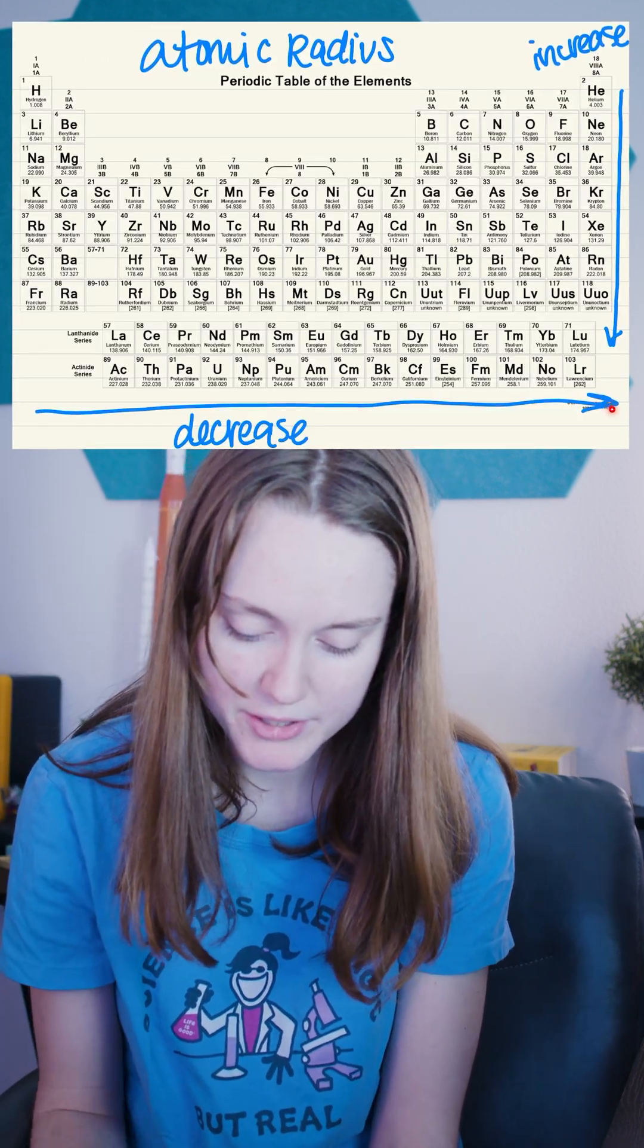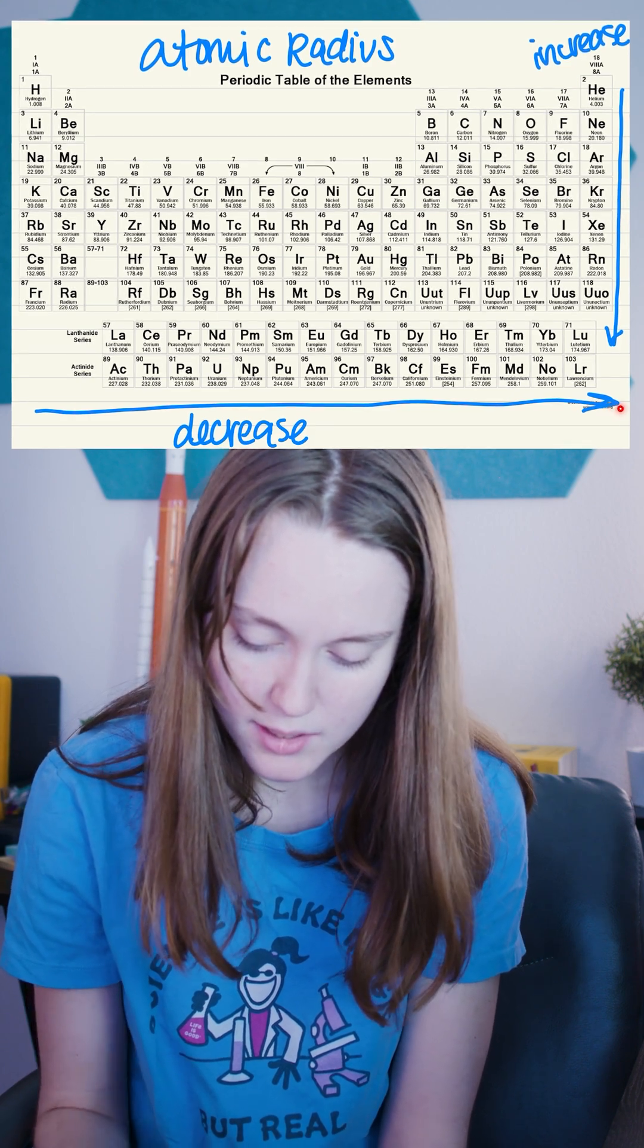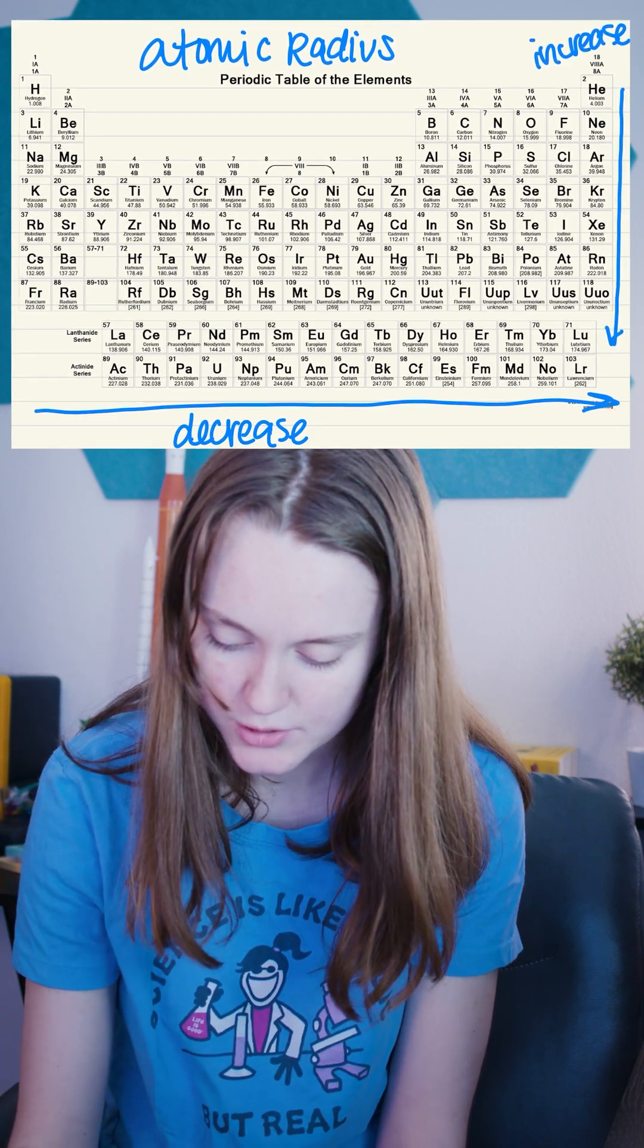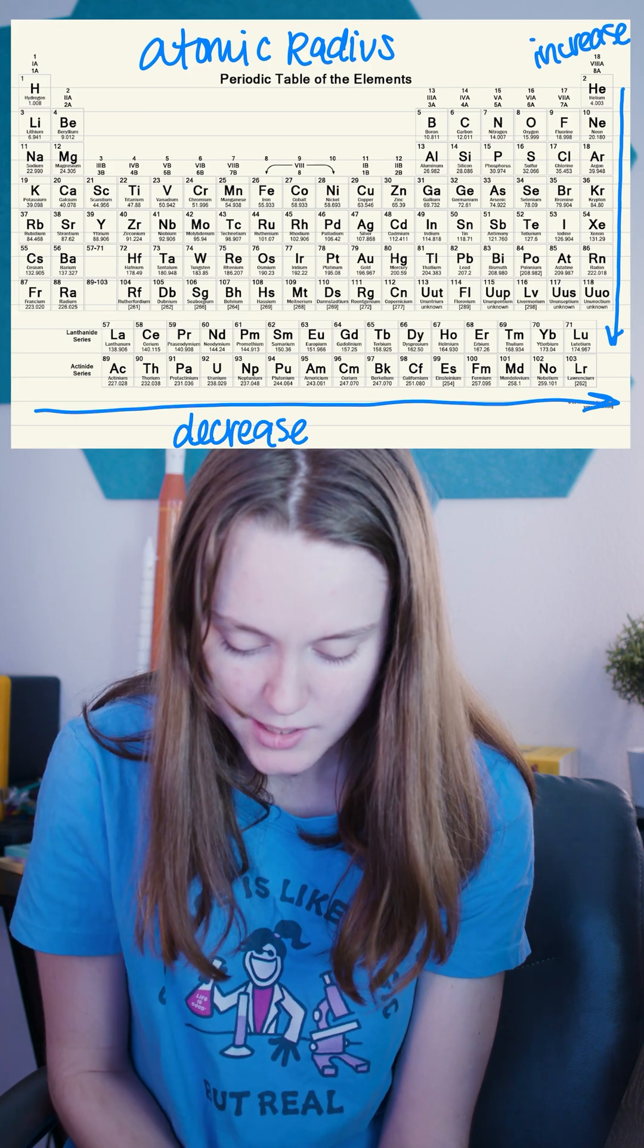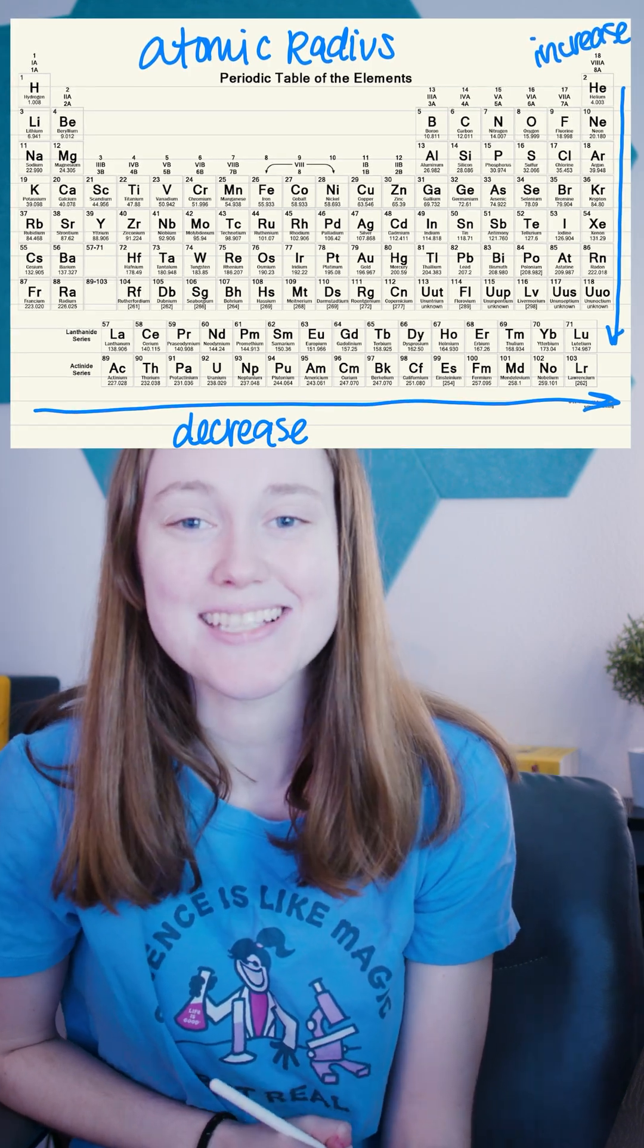So if we look here at the periodic table of our elements, we can see that atomic radius is going to increase as you are going down and decrease as you are going to the right. So that is atomic radius.